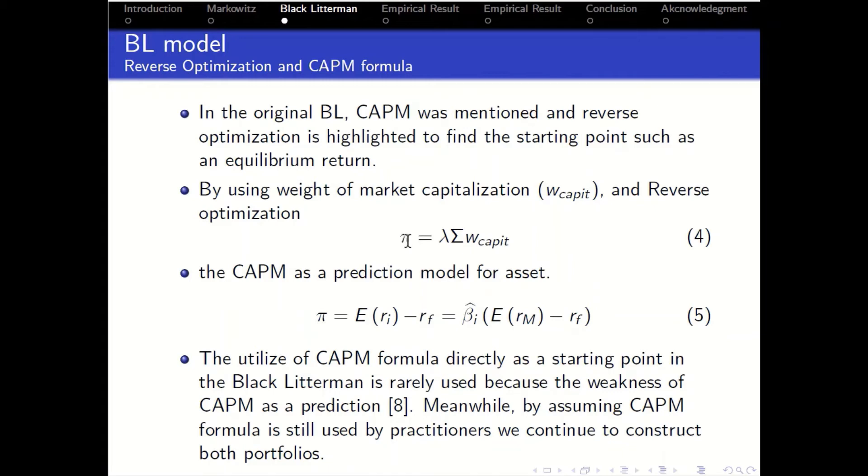The type one of P is in equation four and the second type in equation five. In equation four, this is called reverse optimization because we know about the weight of capitalization as an input to get the equilibrium return. This is the equilibrium return because we use the known market weight capitalization.